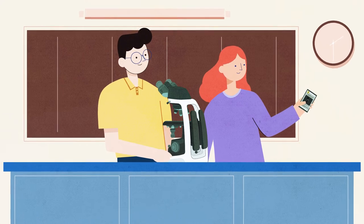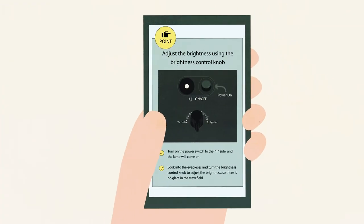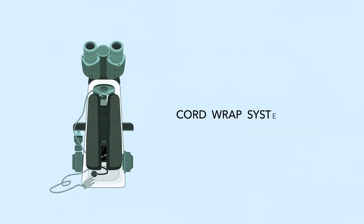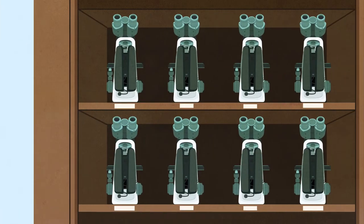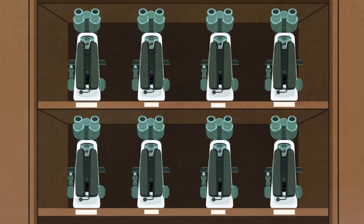The EI provides intuitive operation and a mobile-friendly smart guide, empowering students to learn independently. The EI's integrated cord wrap system and compact body make it easy for students to carry and store the microscope.